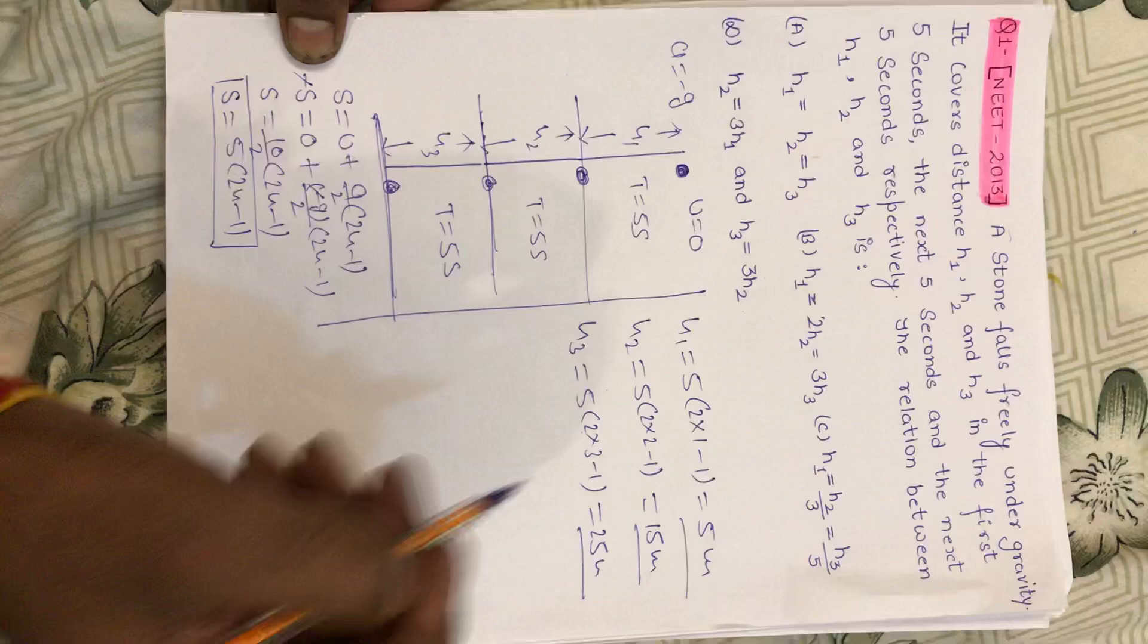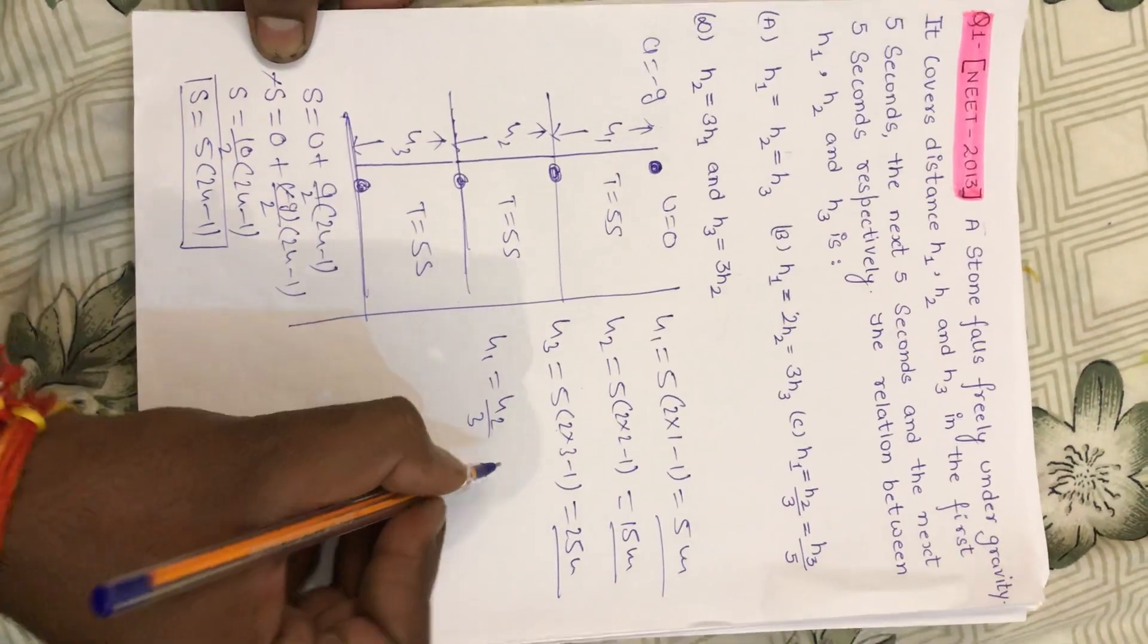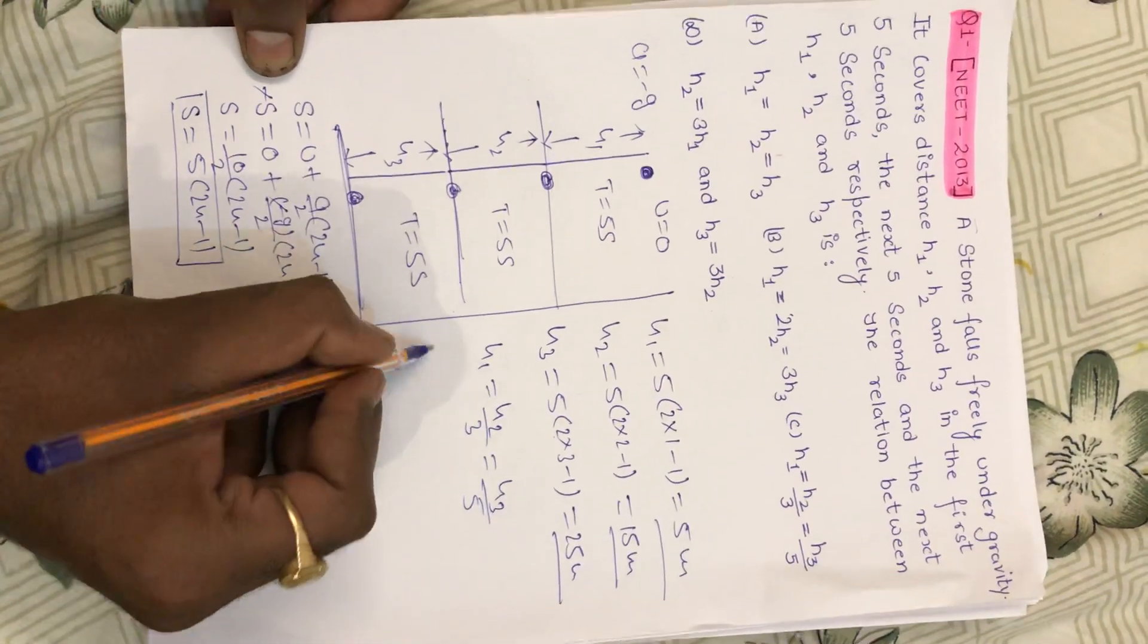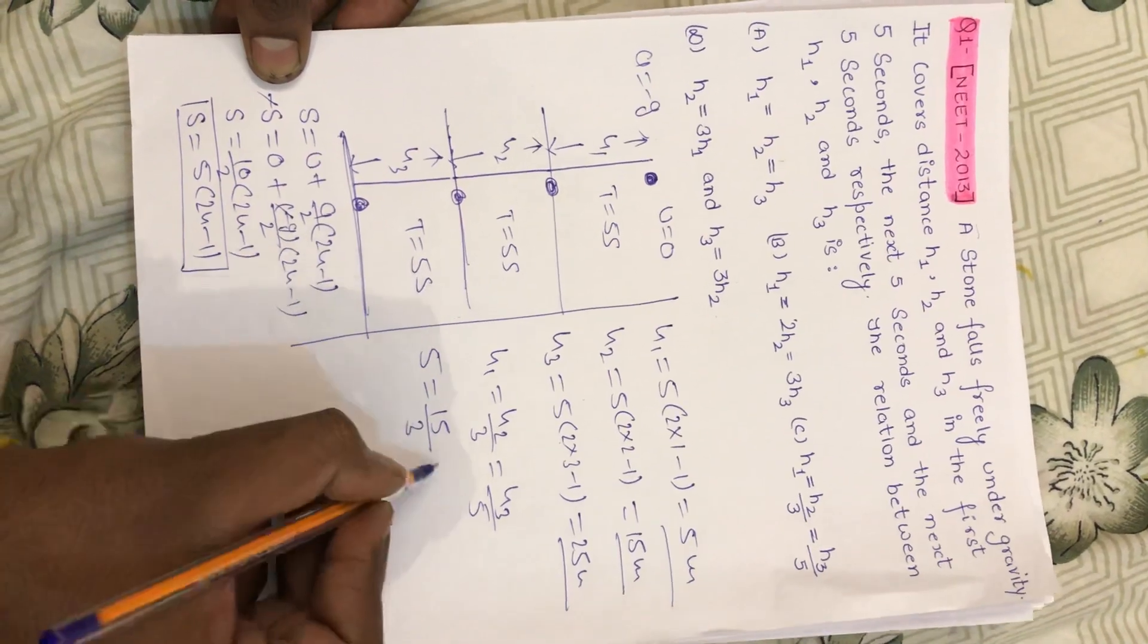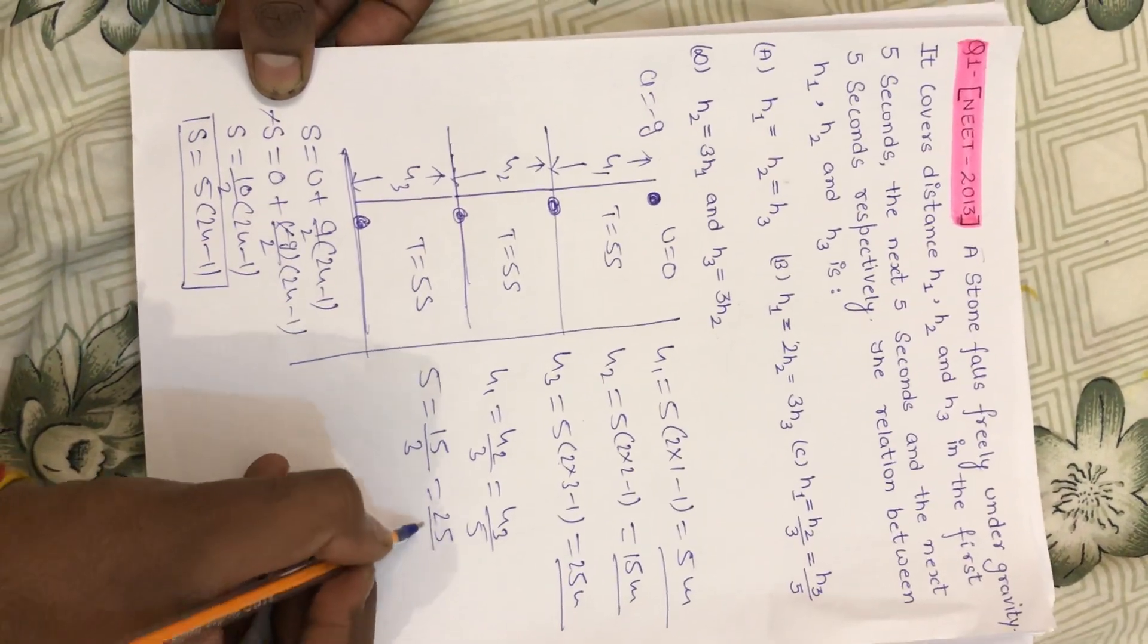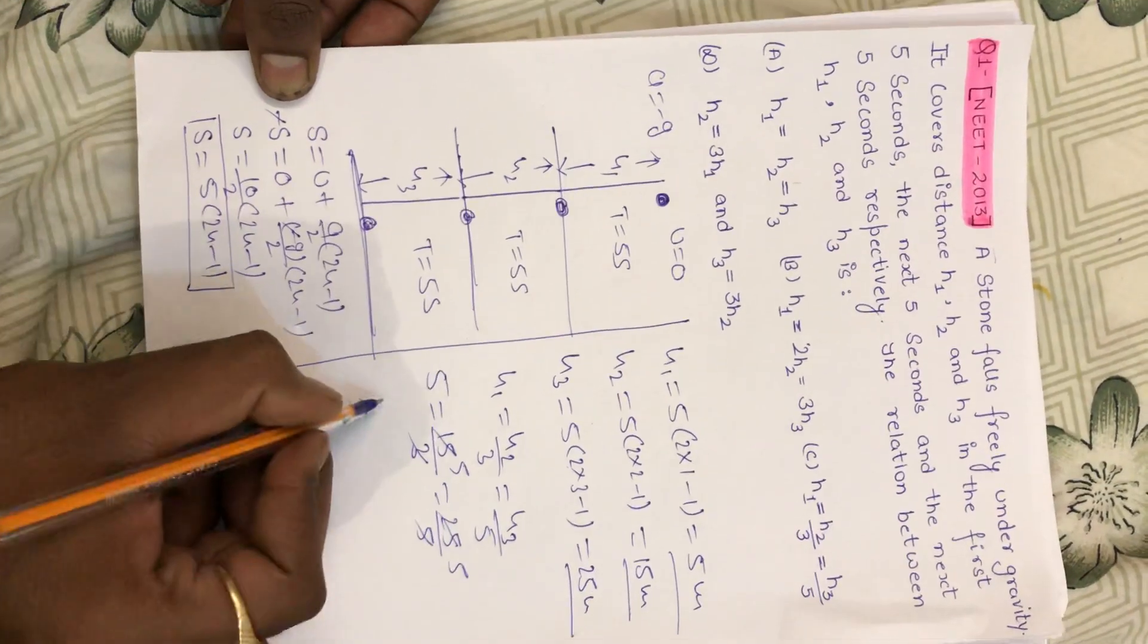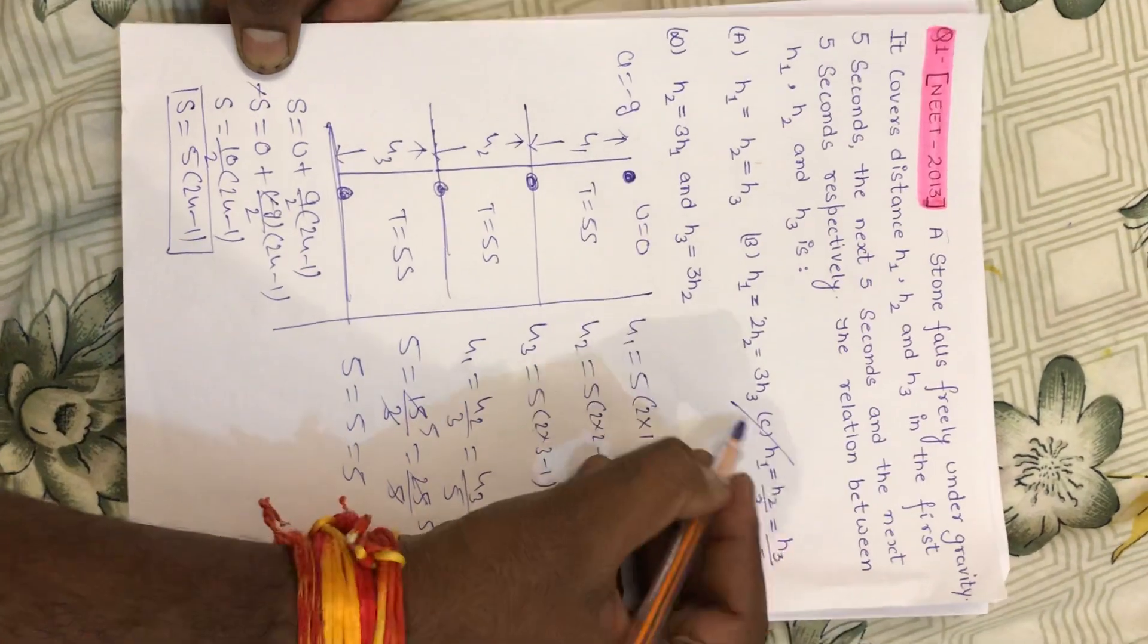Now I match the option. If I see the third option, then I can see h1 is equal to h2 by 3 and s3 by 5. I will put h1 value 5, s2 value 15 upon 3, and s3 value 25 upon 5. If I see, all the displacements are 5. This means the relation is correct, the answer is correct.